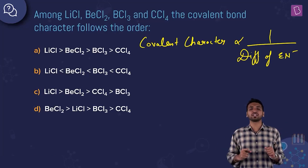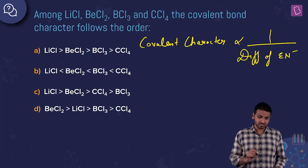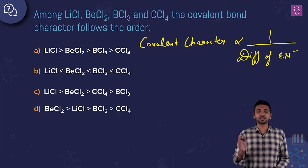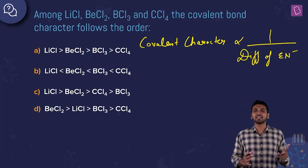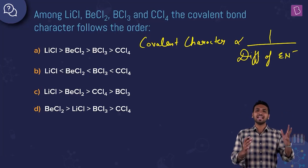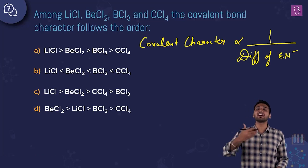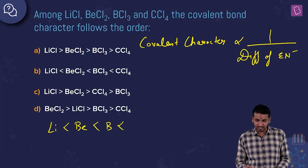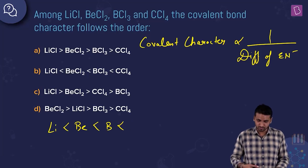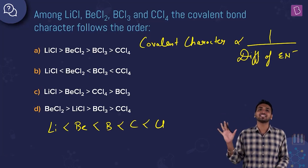If there is less electronegativity difference, the bond is more covalent; if there is a large electronegativity difference, the bond is more ionic and less covalent. We need to arrange lithium, beryllium, boron, and carbon by electronegativity. Moving left to right in the periodic table, atomic size decreases and electronegativity increases, so the order is Li < Be < B < C.